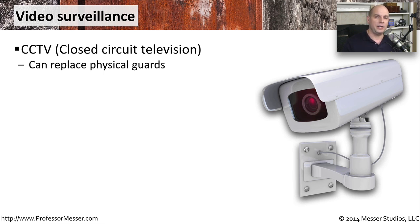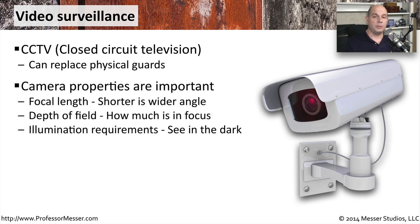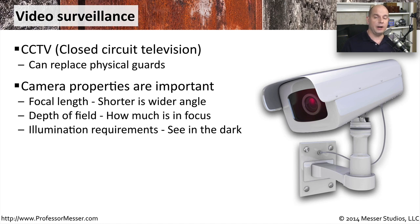When purchasing cameras, you need to look at the specifications carefully. One consideration is the focal length — how wide or narrow angle the video stream might be. Depth of field is another important consideration; a narrow depth of field focuses only on a certain area, while a broad depth of field keeps both close and far objects in focus. You should also consider how well the camera needs to perform in dark environments — cameras with infrared capabilities allow you to effectively see in the dark, though you may only need daytime recording.